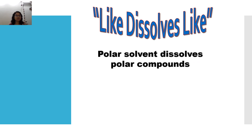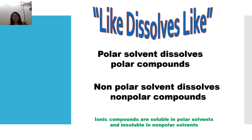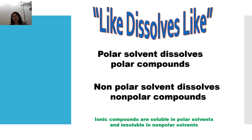An important principle: like dissolves like. Polar solvents dissolve polar compounds and non-polar solvents dissolve non-polar compounds. For example, sodium chloride in cooking oil will not dissolve, but sodium chloride in water will dissolve because water is a polar solvent and sodium chloride is an ionic species — polar and ionic species dissolve in polar solvents. This concept is very important in the chemistry lab: whenever we perform chemical reactions, we should understand which kind of solvent to use for a particular reaction.